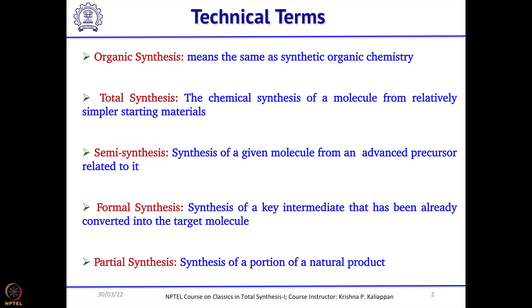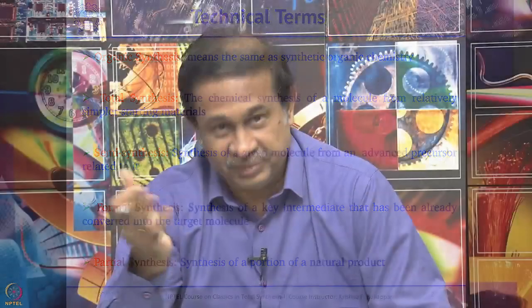Then you also see semi synthesis in literature. What does it mean? It means that you are making the target molecule, but not from commercially available starting material, but from an advanced precursor which has almost all the elements, all the atoms present in the final molecule. I will give one example of semi synthesis, and I will also give an example of formal synthesis and partial synthesis.